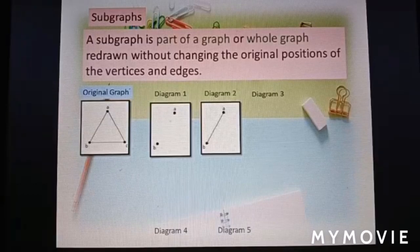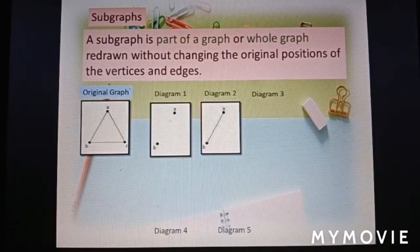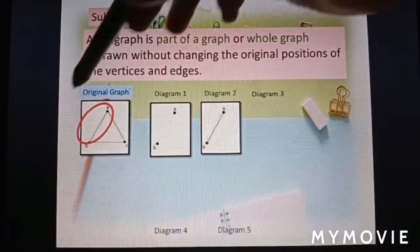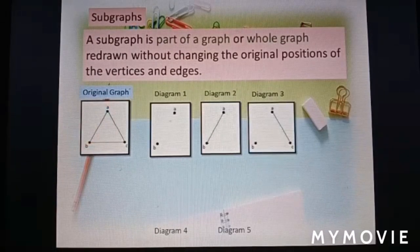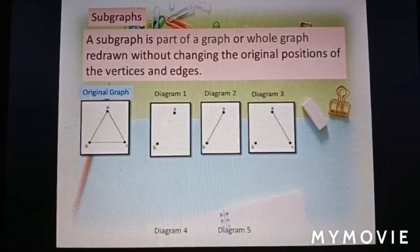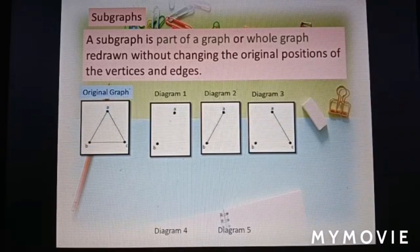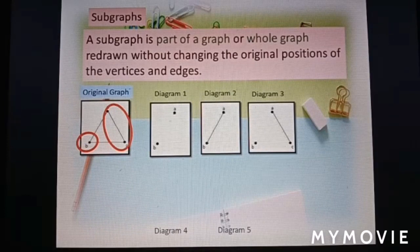Diagram 2: edge AB is also one part from the original graph. Diagram 3: edge AC and point B are from the original graph.